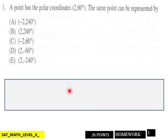Page one of the homework: a point has polar coordinates of 2, 60 degrees. The same point can be represented, and here's your choices here, six points for page one.